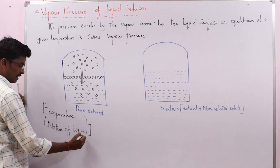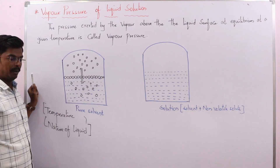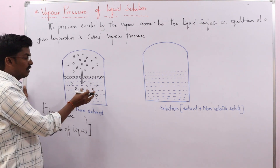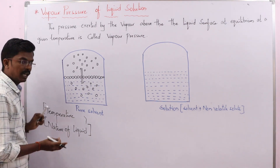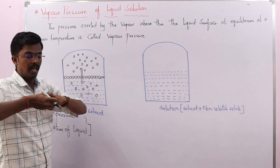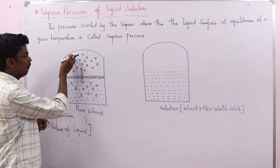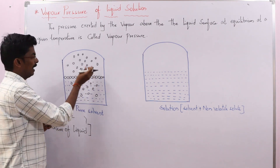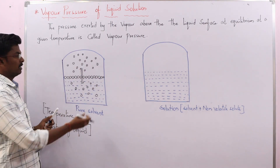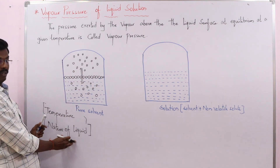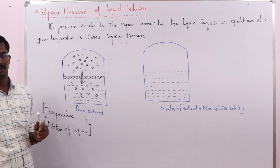Another factor is the nature of the liquid. Different liquids have different magnitudes of vapour pressure because some liquids contain strong intermolecular attractions and some contain weak intermolecular attractions. Liquids with weak intermolecular attractions allow particles to escape easily and become vapour, producing more vapours that exert more pressure. That is why liquids with weak interactions show higher vapour pressure.